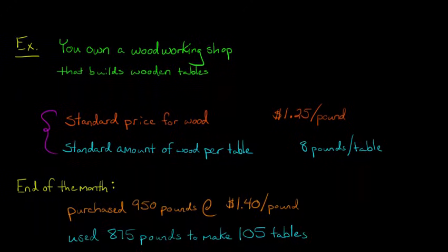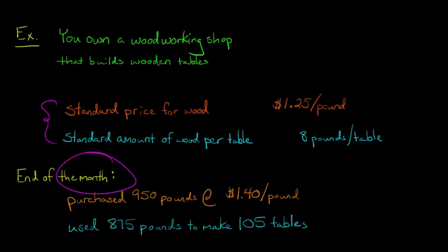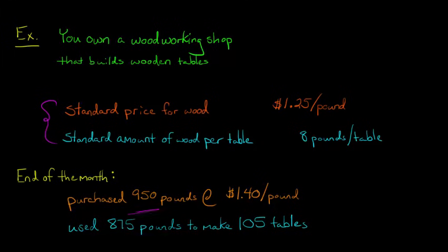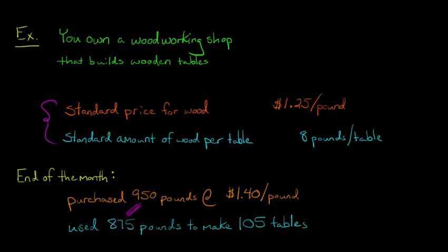So now at the end of the month, at the end of the period, we take a look and say: during that month, we purchased 950 pounds of wood — this is the actual total. We actually purchased 950 pounds and it cost us $1.40 a pound. We used 875 pounds of wood and we made 105 tables out of that. Now, right off the bat, we're going to have a complication because we didn't use all the materials that we purchased, and that's going to put a wrinkle in our calculations when we do the variance analysis.